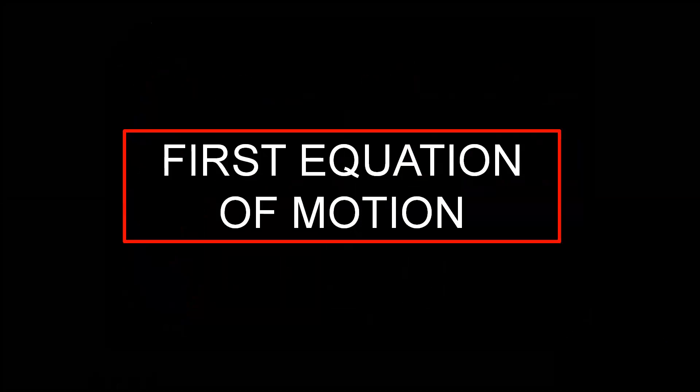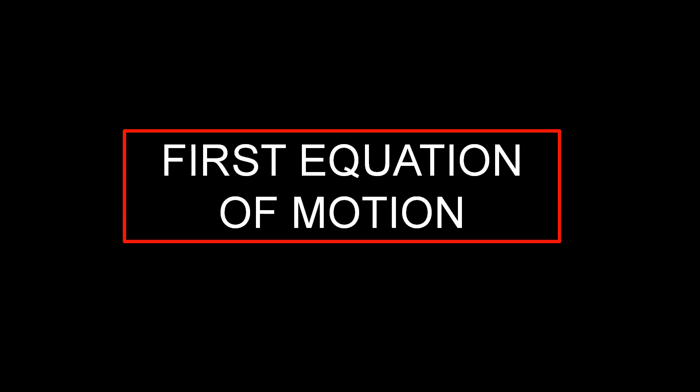The topic is the VT graph, that is the velocity-time graph, which relates to the equations of motion. In this video, we will discuss the first equation of motion. We have three equations of motion in total. The significance of the velocity-time graph is that the slope of the VT graph gives you acceleration, and the area under the VT graph gives you displacement.